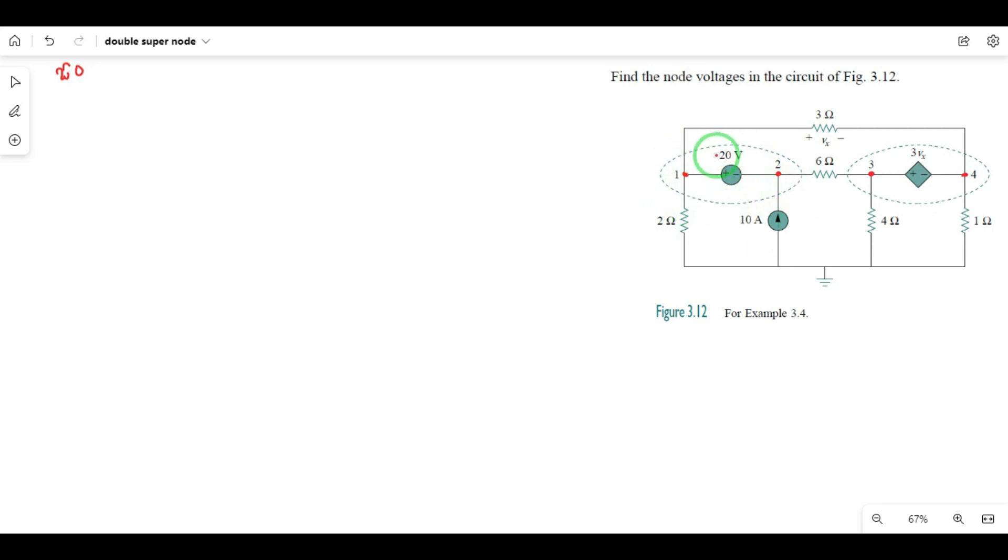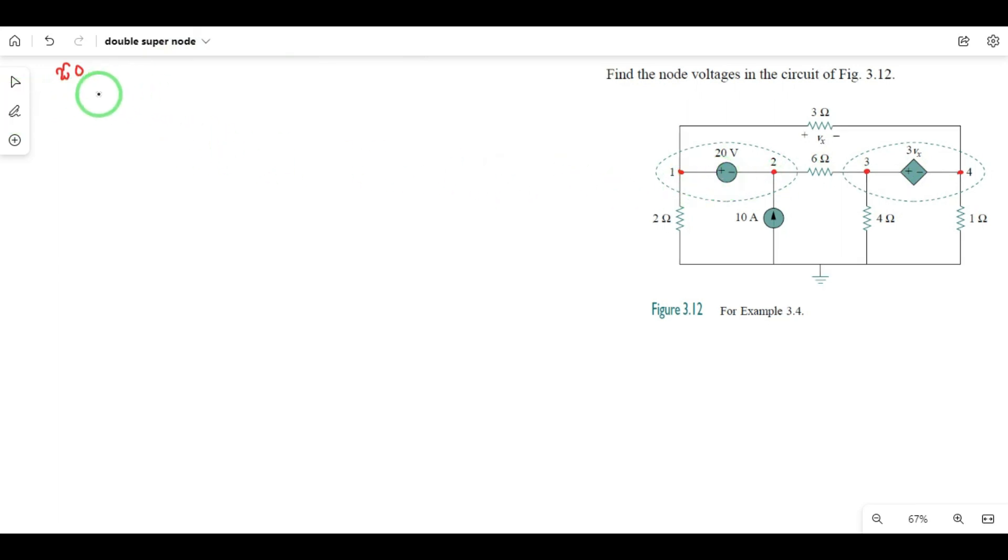The two circles which are nodes 1,2 and 3,4 form super nodes, either with an independent source or dependent source. Two super nodes form here. We find the equations and we find the solution.